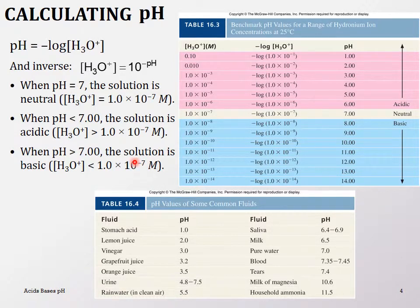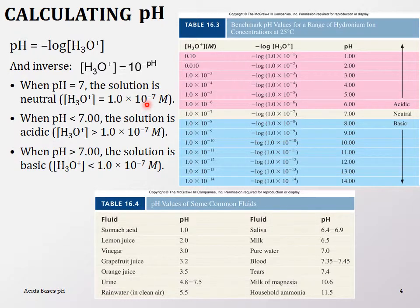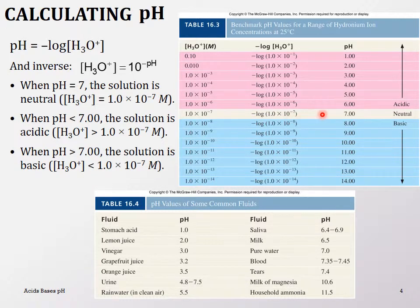So for example, if you calculate the pH for a hydronium ion concentration of 1.0×10⁻⁷, you will see that pH = 7, because it's a log base 10 calculation. The negative log of 1.0×10⁻⁷ gives you 7.